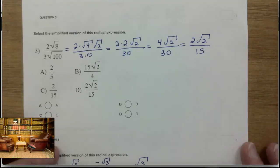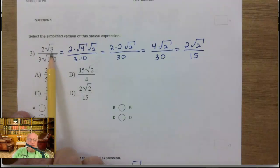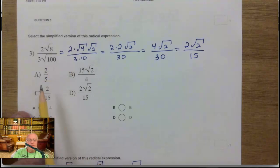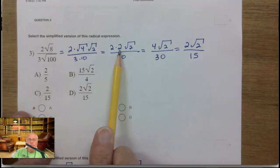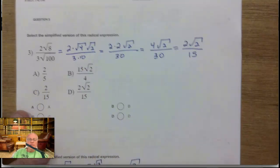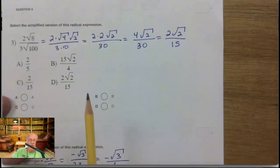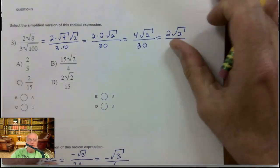Number three. First, you can recognize that 8 has a perfect square factor — 4. And you might recognize that 100, the square root is 10, so just 3 times 10 on the bottom — that's 30 on the bottom. The square root of 4 is 2, so 2 times 2 is 4. This isn't quite simplified because I can still divide the top and the bottom by 2, which is what I do right here. And that's your final answer.